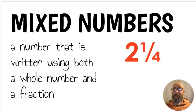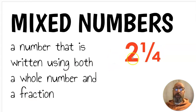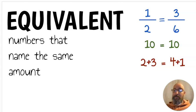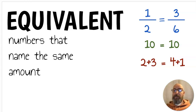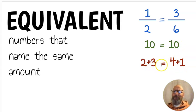We also have a special kind of fraction called a mixed number. A mixed number is a number written using both a whole number and a fraction — for example, two and one-fourth: we have the whole number two and the fraction one-fourth. Next, equivalent means numbers that name the same amount. In fractions, one-half equals three-sixths. It could be as simple as ten equals ten, or two plus three equals four plus one — they both equal five. Equivalent means numbers that name the same amount.